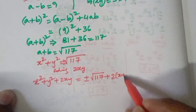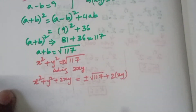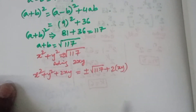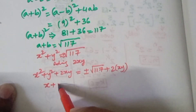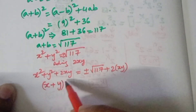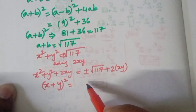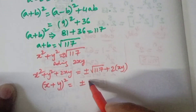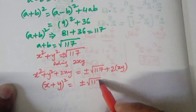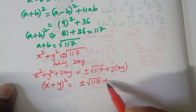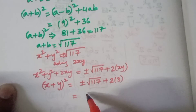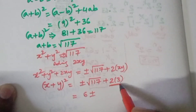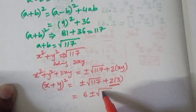This can be written as x plus y whole square equals plus or minus root of 117 plus 2 times xy. Since xy equals 3, that gives us 2 times 3 equals 6. So x plus y whole square equals 6 plus or minus root 117.